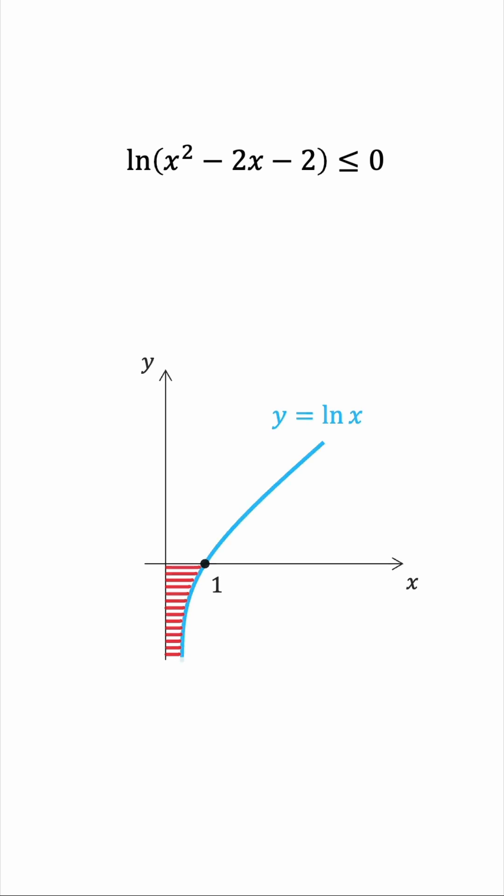So in this case, the quadratic needs to be between 0 and 1. Including 1, but excluding 0 because the natural log is not defined at 0. So this gives us a couple of inequalities to solve.